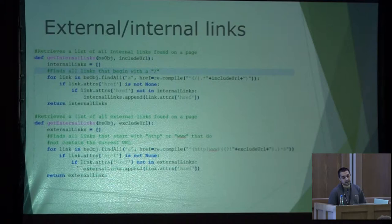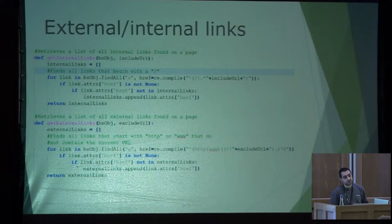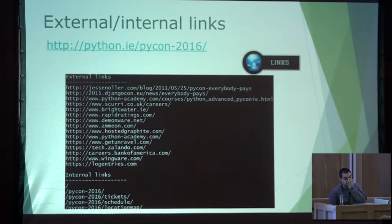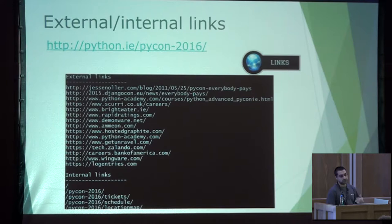For example, if we want to extract external and internal links with BeautifulSoup, it's very easy. If we want to obtain internal links, basically what we want to do is find all links that begin with a slash. For external links, we find all links that start with HTTP and that do not contain the current URL. This is an example where we are extracting the external and internal links for the Python site.